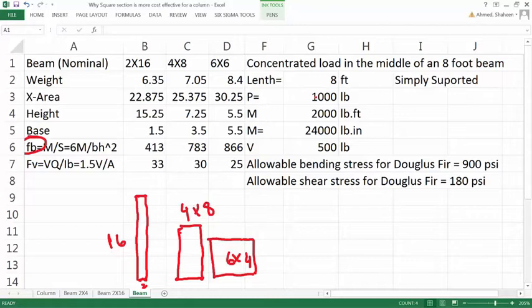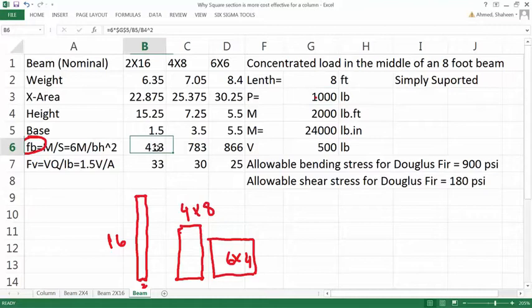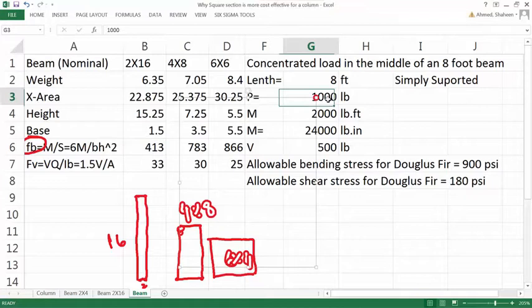For each of these sections for these different types of load. So let's change some of this. So 4,000 pound load I have calculated - on a 2x16 I only have 400 psi. On the other hand, 6x6 has more stress developed in it. Let's change the load to something else. So I say 2,000 pound load.